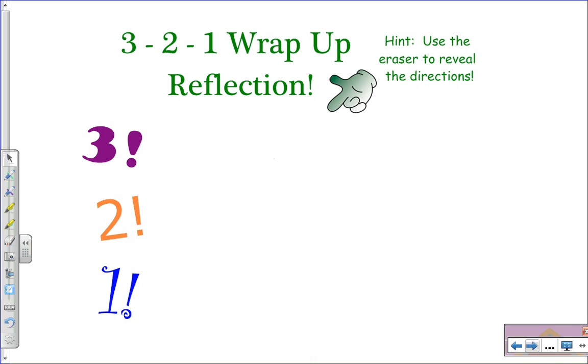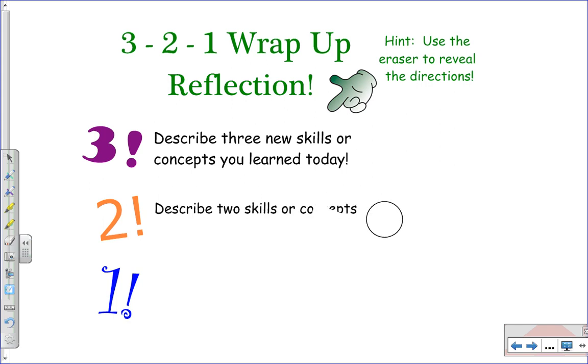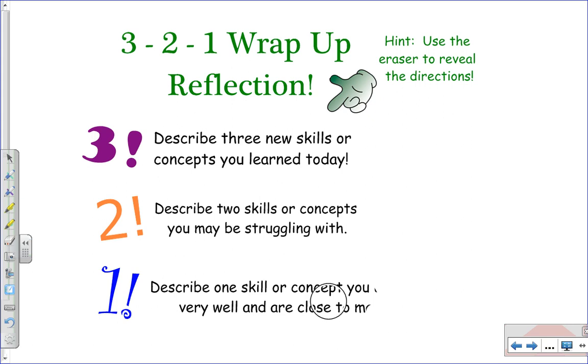Now, this is your time to summarize everything you've learned and still confused about. So I want you to write complete sentences answering these three questions. My first question is, describe three new skills or concepts you have learned today. So you need to write this down on your paper somewhere. Next, describe two skills or concepts you may be struggling with a little bit. And last of all, describe one skill or concept that you understand very well and are close to mastery. So bring this completed worksheet, these completed notes with you and your answers to these three questions to class for our next session.